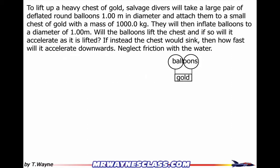Let's start with a picture of what's going on — pretty simple: the balloons and the gold. I can see that I only have two forces acting on the gold: gravity and the buoyancy force, with the balloons pulling them up. I'm going to neglect the tension in the ropes and just work with the buoyancy force directly. I'll assume it can accelerate straight up. If it goes down, I'll get a negative acceleration; if it doesn't accelerate at all, I'll get zero.